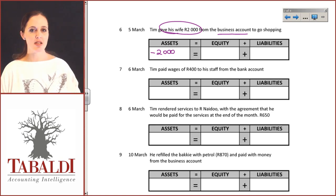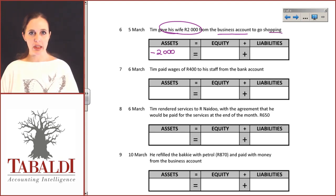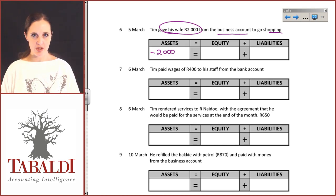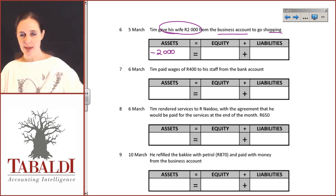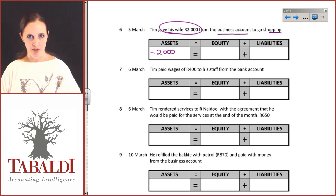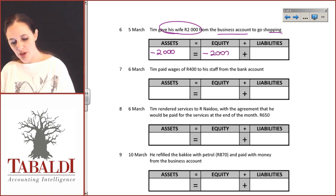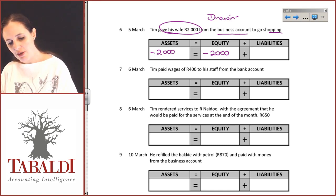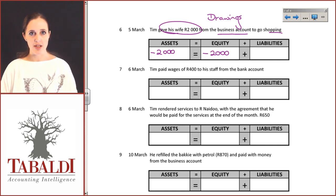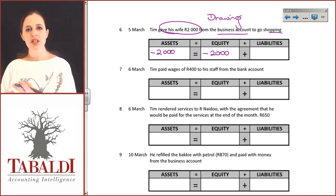Whatever Tim does in his personal capacity does not necessarily affect the business. Her shopping is not part of the business and has nothing to do with it. However, the fact that Tim has taken money out of the business for his personal use means that from the business's point of view, his share in the business has dropped — he has taken some of his benefits out. So his equity will drop because he has taken part of his share. This is what we call drawings. The owner definitely has the right to take money out of the business for personal use, but it needs to be expressed as him taking part of his share out.